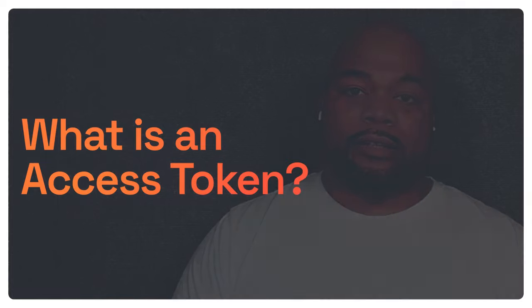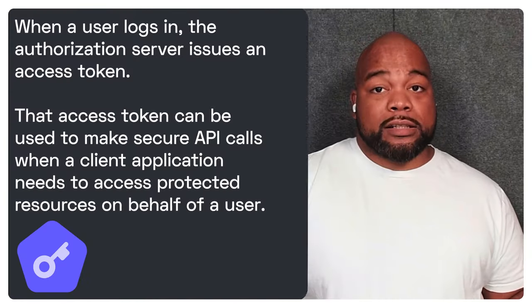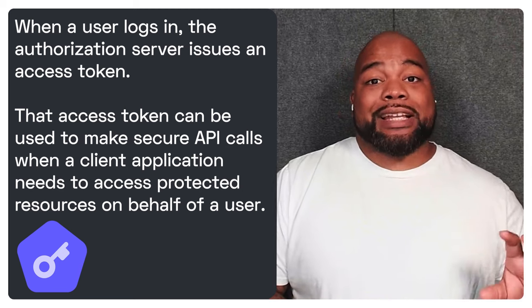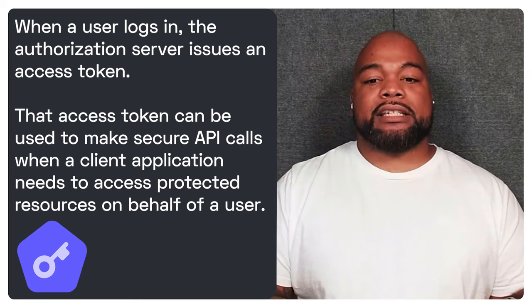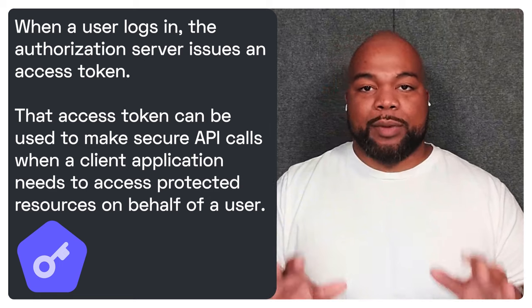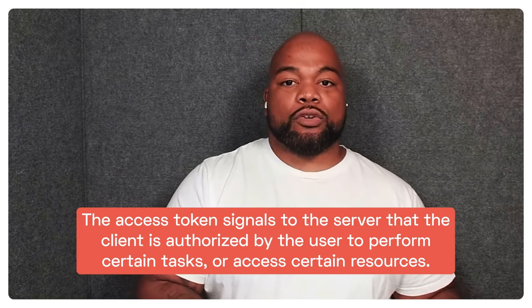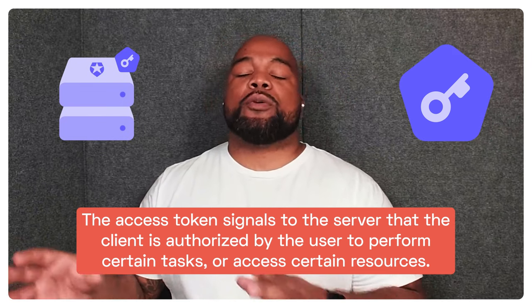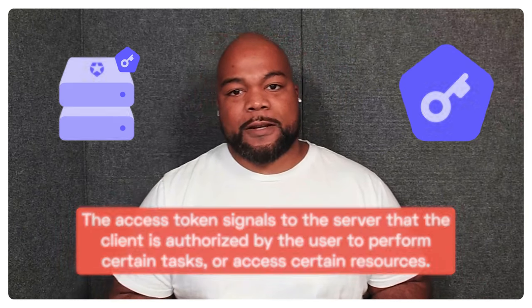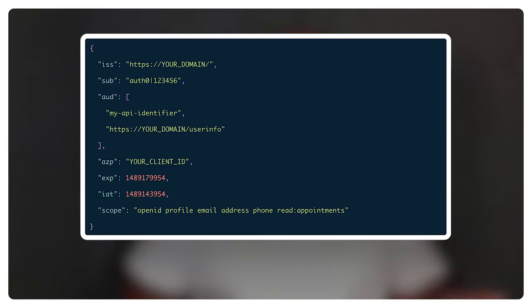Now let's move on to access tokens. When a user logs in, the authorization server issues an access token. That access token can be used to make secure API calls when a client application needs to access protected resources on behalf of the user. The access token signals to the server that the client is authorized by the user to perform certain tasks or access certain resources. OAuth 2.0 doesn't define a format for access tokens, but here at Auth0, we issue access tokens for APIs that follow the JSON Web Token standard, or JWT for short.